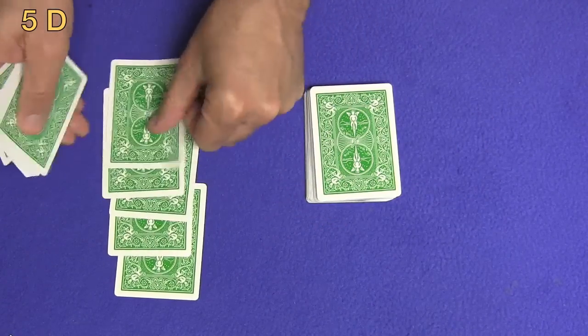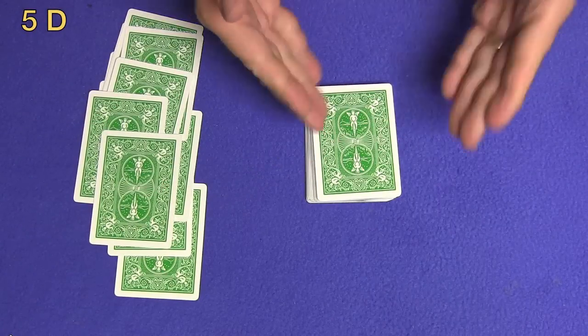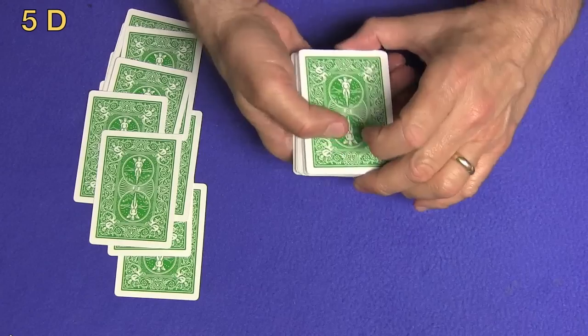One, two, three, four, five, six, seven, eight, nine, ten, eleven, twelve. And now the 12th card should be your five of diamonds.